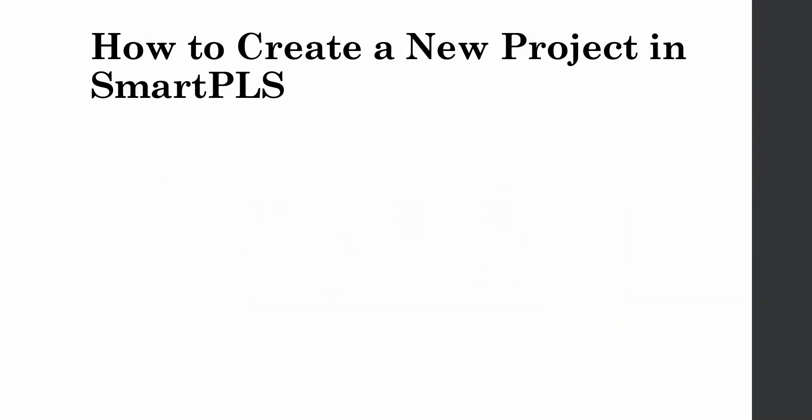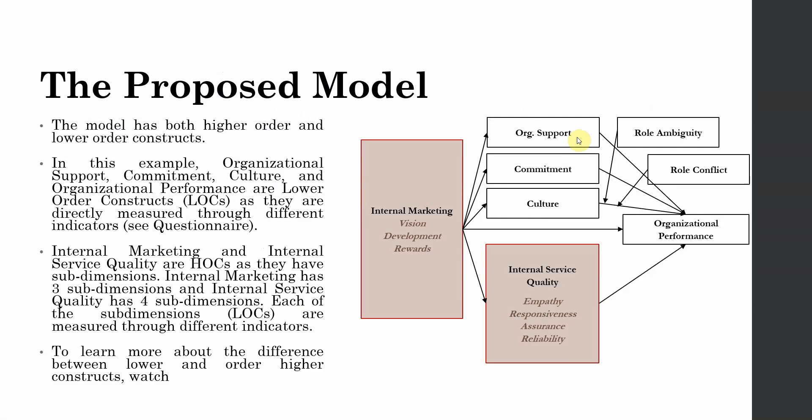Or let's have a look at our example. Now in this case here, organizational support is an endogenous variable as well as an exogenous variable, an endogenous variable because internal marketing is influencing organizational support, and exogenous variable because organizational support is influencing organizational performance. Now we are going to test this model as we go along the course.